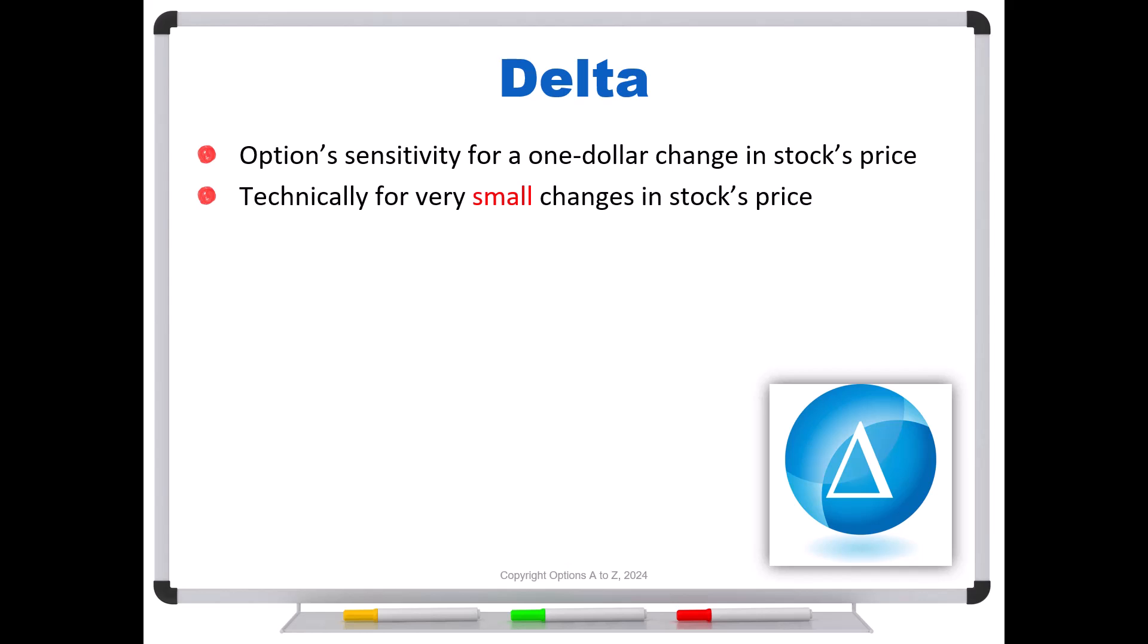delta, really all of your Greeks, are for very small changes in the stock's price, fractions of a penny. But for practical purposes, we can say that it's for a $1 change in the stock's price.